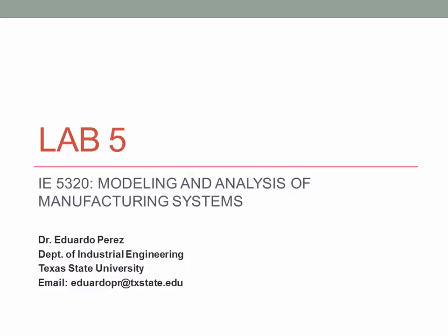This is lab number five for the modeling and analysis of manufacturing systems course. Today we are not going to be adding any new blocks in terms of learning logic — that's a good idea for your exam preparation. We're going to reuse the blocks you already know, but I want to focus on the use of attributes and variables. The idea today is to show you a new type of variable you can use to collect information from your system — in particular, we're going to be looking at the money variable.